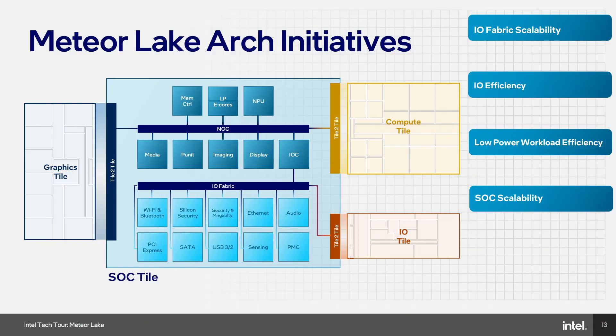The CPU wants transistors tuned for power-performance efficiency and needs to ramp voltage as it requires more compute power. Graphics wants very dense transistors with lots of compute that run on minimum VCC. Meteor Lake represented the ability to match transistor to function to an extent never done before. For scalability, the architecture was designed so that if we start with three agent IPs today and add three more tomorrow, we don't need to redesign — the fabric is plug-and-play scalable.